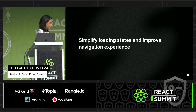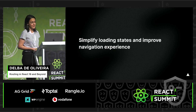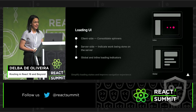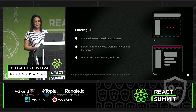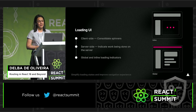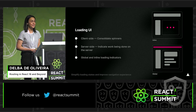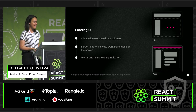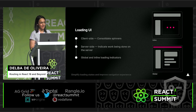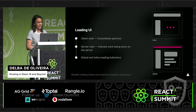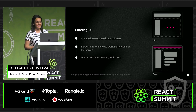If we combine this with concurrent features — such as transitions, suspense, and the future off-screen component — we can simplify the creation of loading states and improve the navigation experience. For example, with client-side routing fetching as you render, you may have too many staggered loading states or spinners; what you want is to consolidate them into fewer, more meaningful loading indicators. On the other hand, with server-side rendering, you have to fetch and render before navigation starts, so you want to include loading UI to indicate work is being done. In either case, the framework should provide an easy convention to allow developers to create loading states.